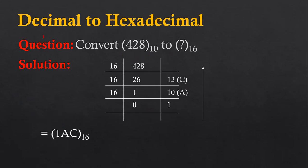Next example is converting decimal to hexadecimal. The value is 428. So 428 divided by 16 is 26 times, and the remainder is 12. In hexadecimal, 12 is equivalent to C. Then 26 divided by 16 is one time, remainder is 10, and 10 is equivalent to A. Then one cannot be divided by 16, so remainder is one. Writing values from bottom to up, the result is 1AC. This is how I converted decimal 428 into hexadecimal 1AC.